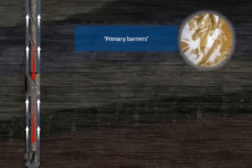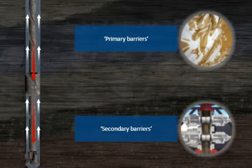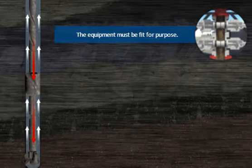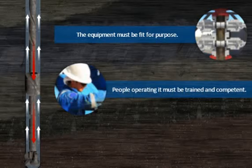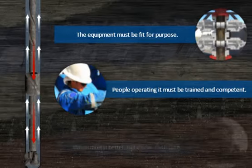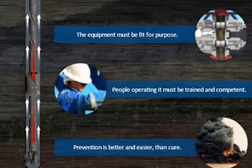No matter what is happening with the well, be it drilling or well intervention, the primary barriers are there to prevent a blowout, and if they are ineffective then the secondary barriers come into play. For the secondary barriers to be effective and stop a blowout, the equipment must be fit for purpose, and the people operating it must be suitably trained and competent. Any signs of loss of primary well control must be quickly recognized and acted upon to stop an event from becoming uncontrollable. As ever, prevention is better and easier than cure.